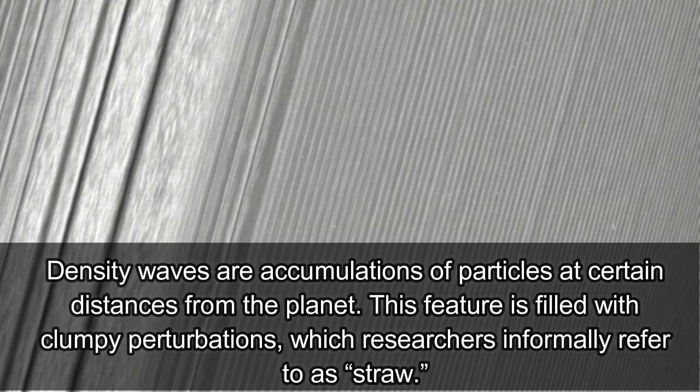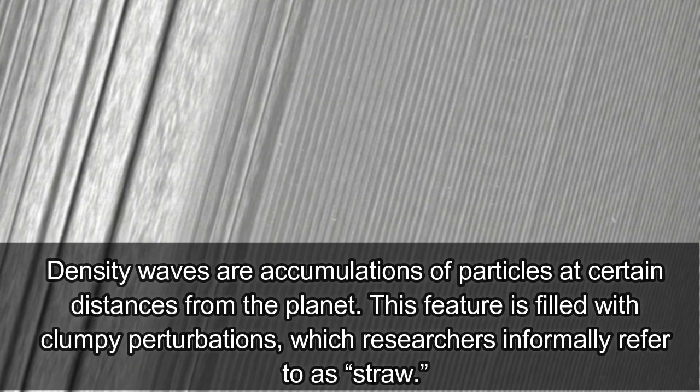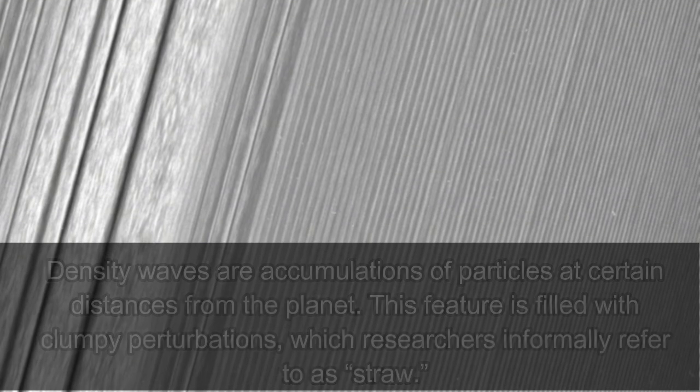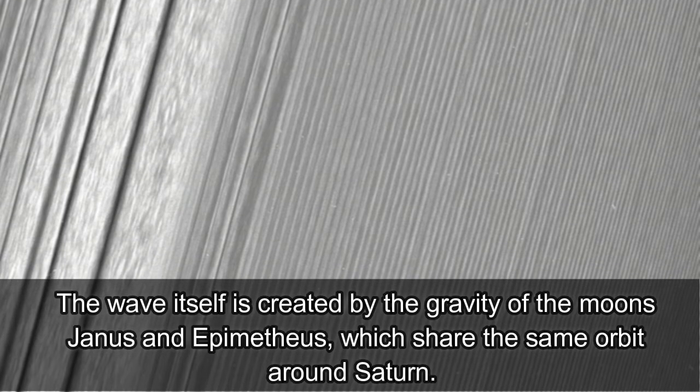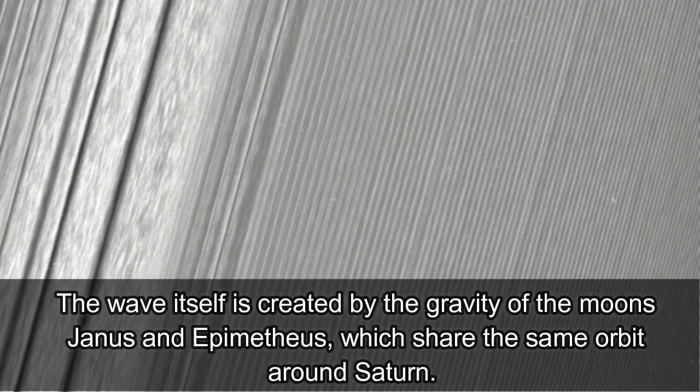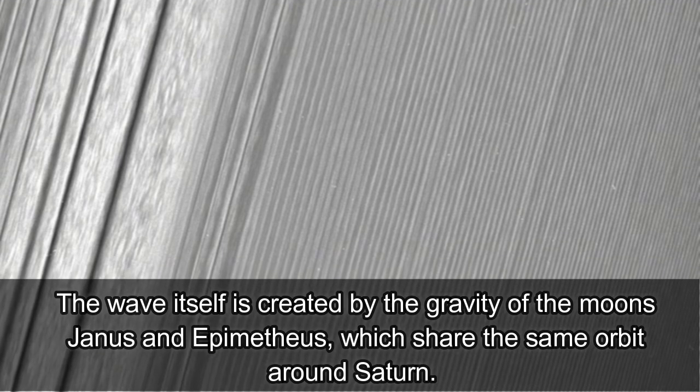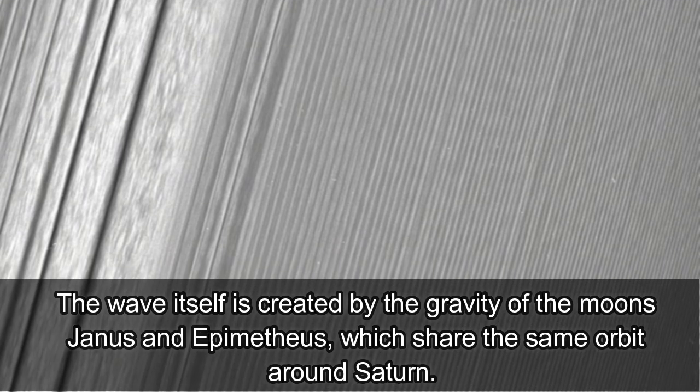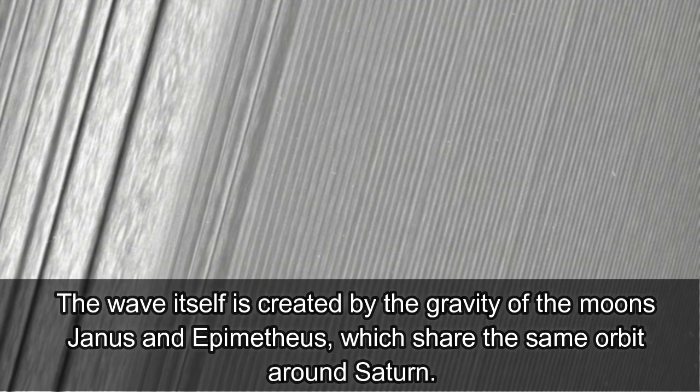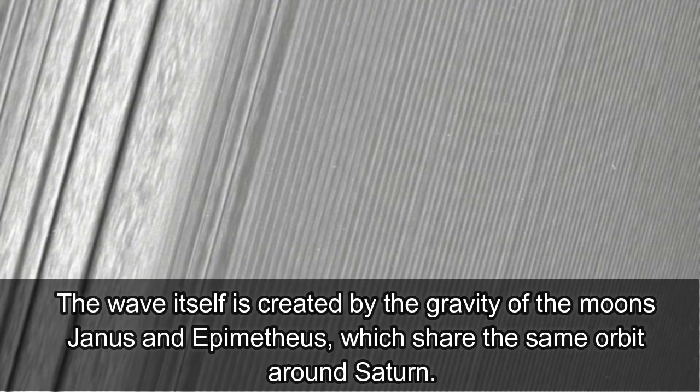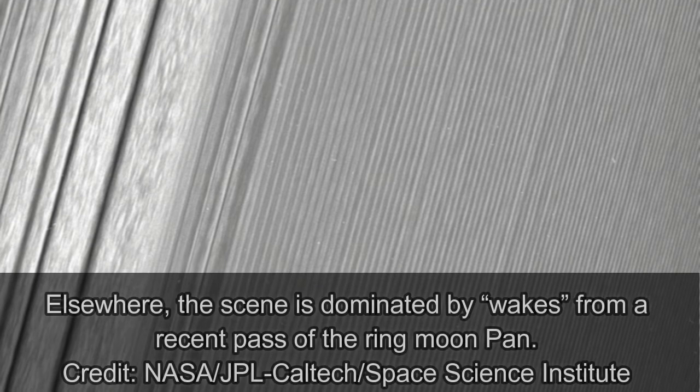The spacecraft will remain in the ring-grazing orbit until April 22, completing 20 laps around the planet before the mission's final flyby of the large haze-enshrouded moon Titan nudges Cassini on a trajectory between Saturn's cloud tops and its innermost ring for the spectacular grand finale phase of the multi-billion dollar, two-decade-long mission.